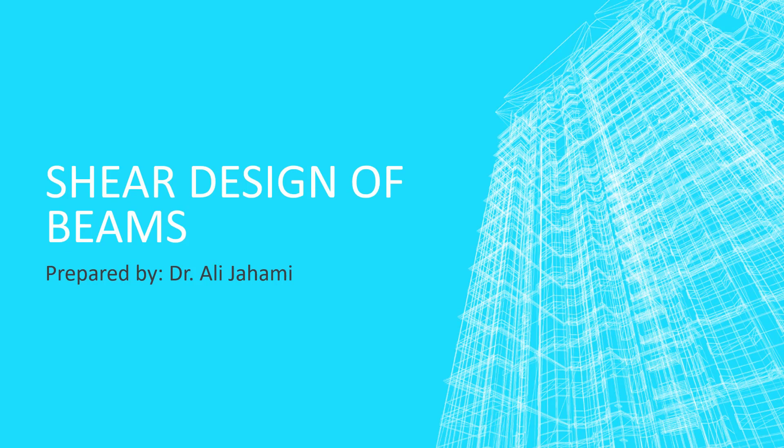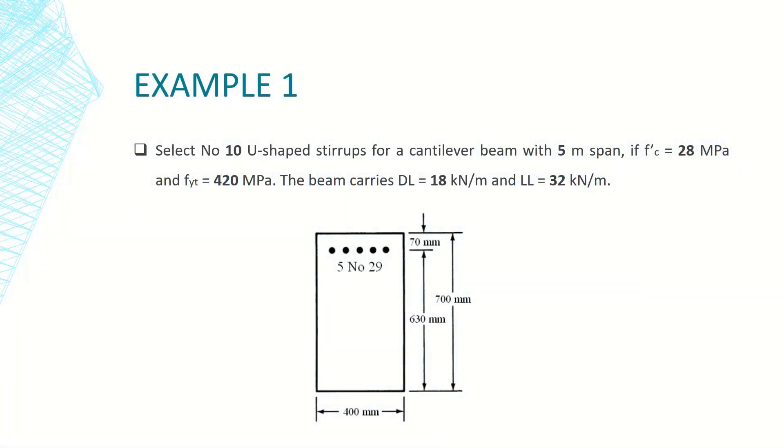Everyone, today inshallah I will solve an example on shear design of beams. This example consists of a cantilever beam. The beam has a span of 5 meters, a compressive strength of 28 MPa for concrete.